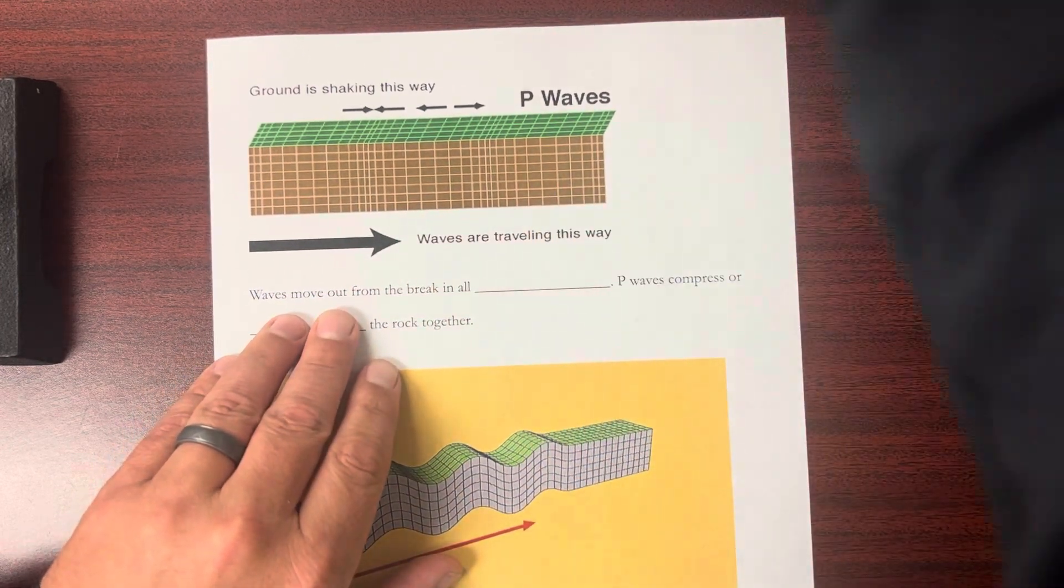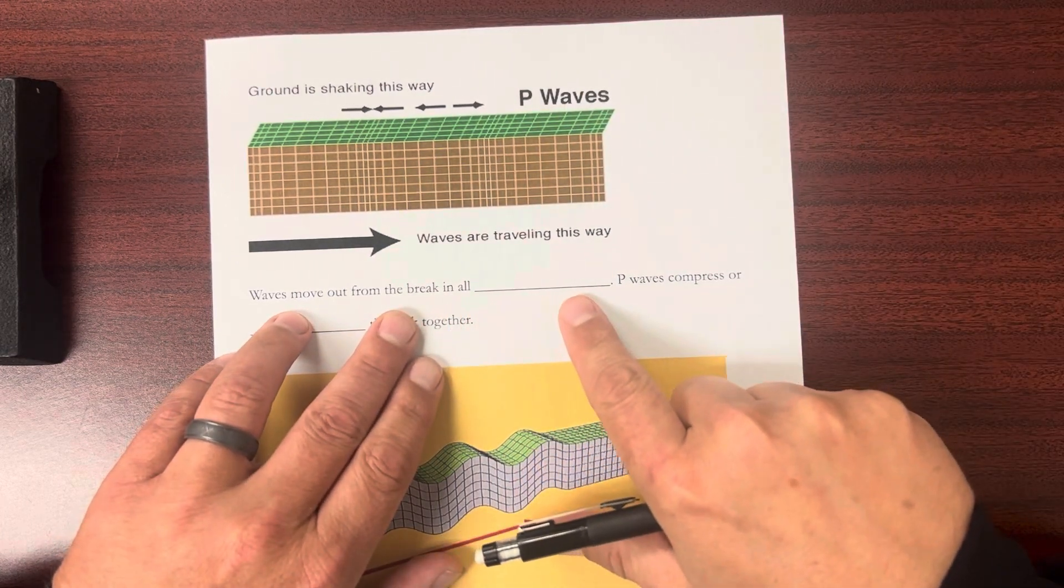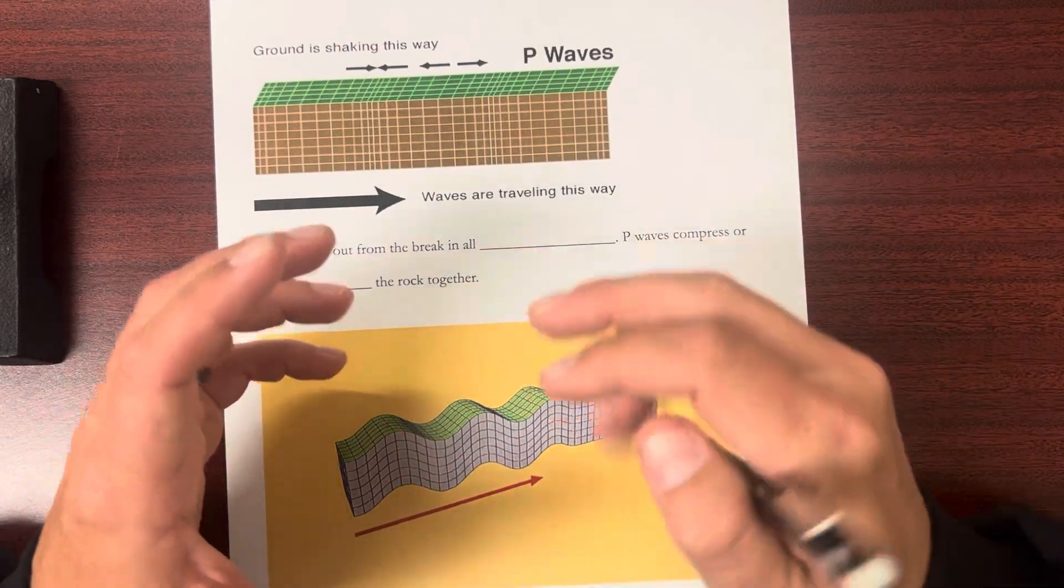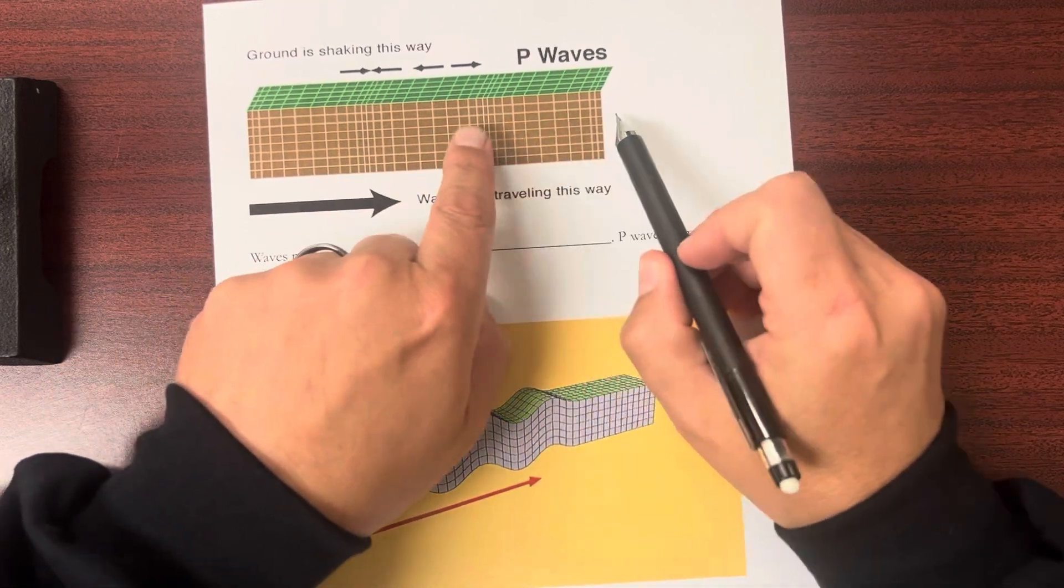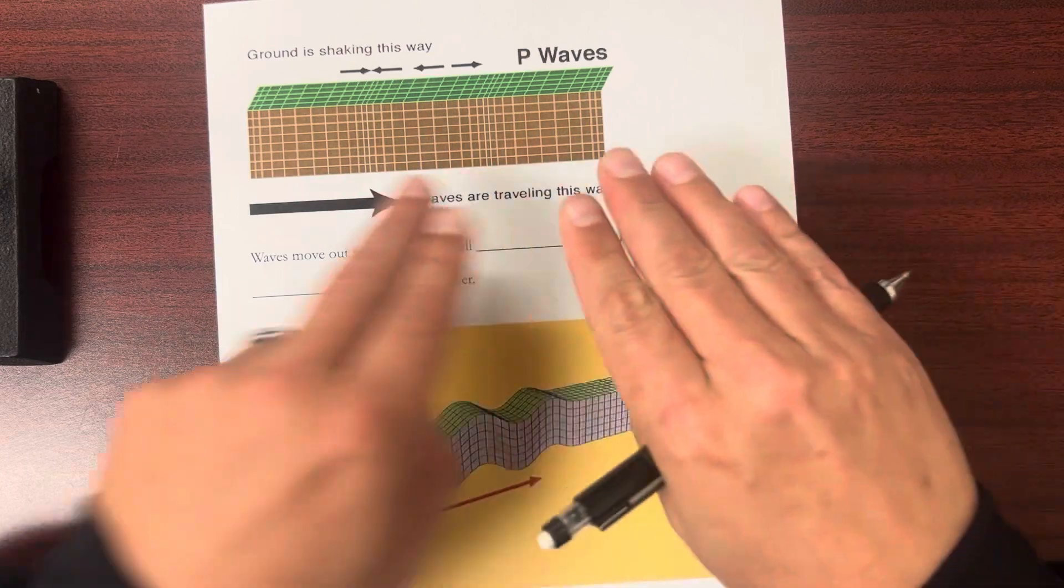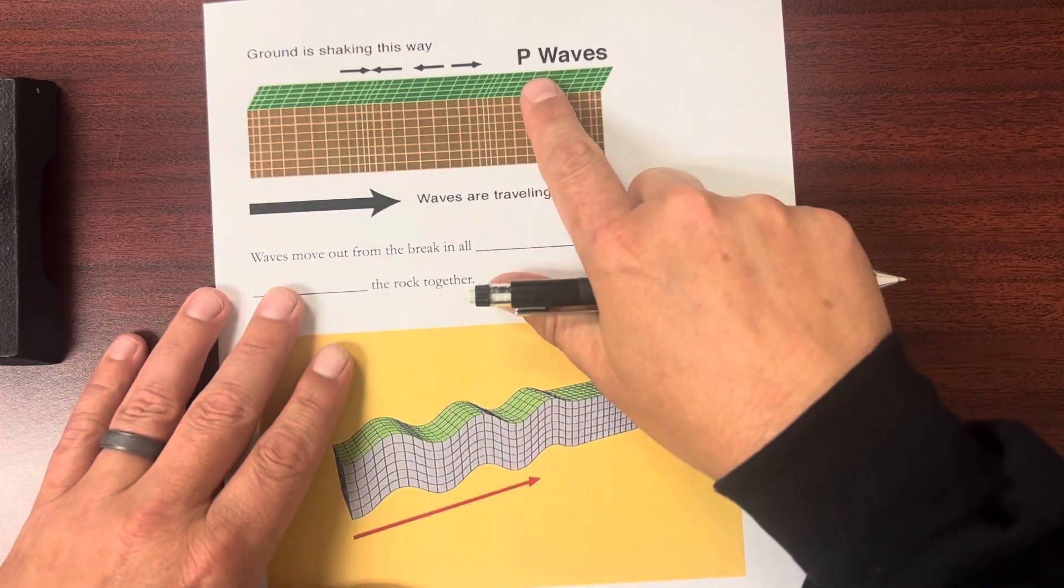So waves move out from the break in all directions. P waves compress or squeeze the rock together. And you see the squeezing and releasing, squeezing, releasing happens all the way through the rock. So it's constantly going like this through the rock. That's just P waves.